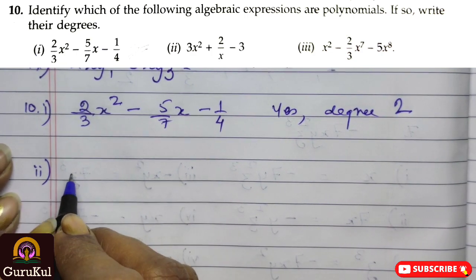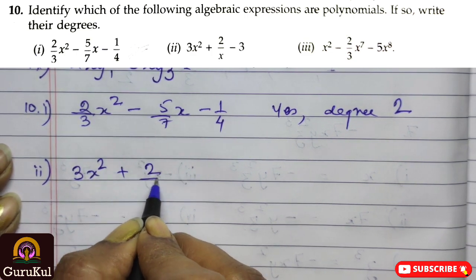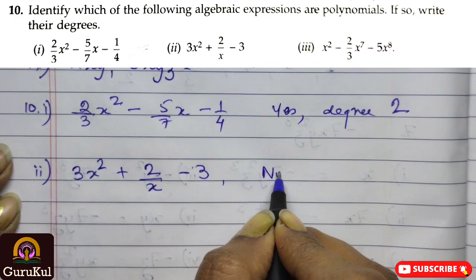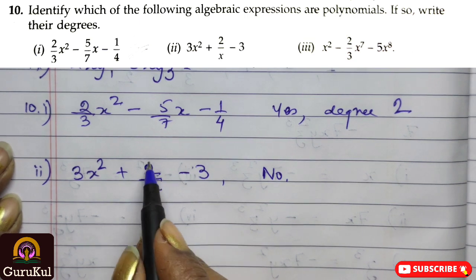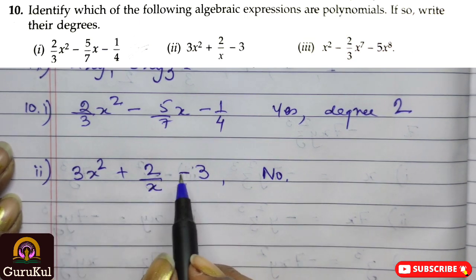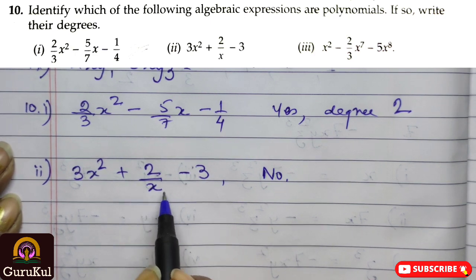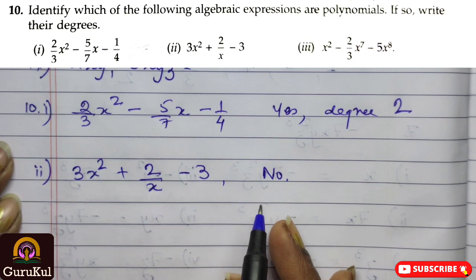Second part, 3x square plus 2yx minus 3. No, this is not a polynomial. The reason is, that in a fraction, in an algebraic equation, if we have a fraction, we should not be having any literal at the denominator. Hence, this is not a polynomial.